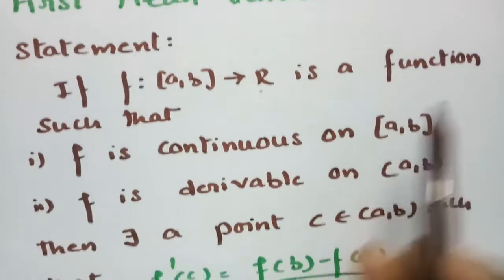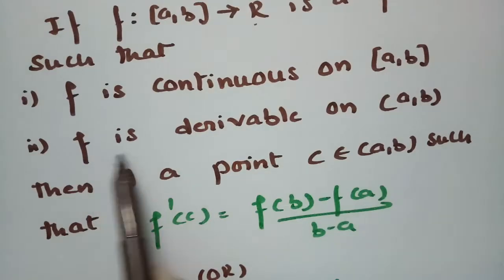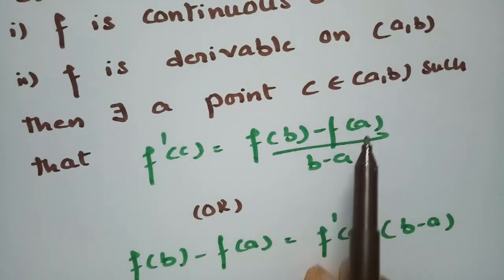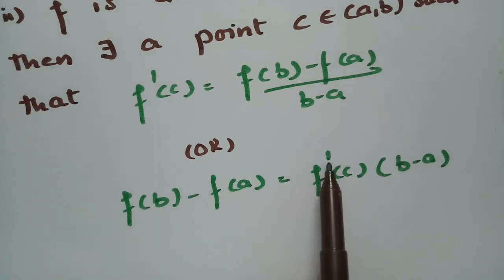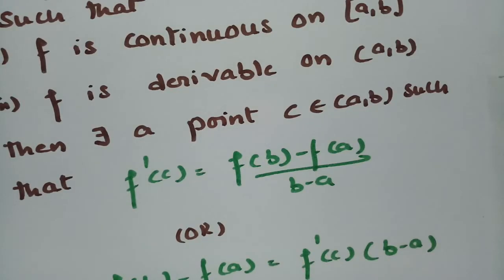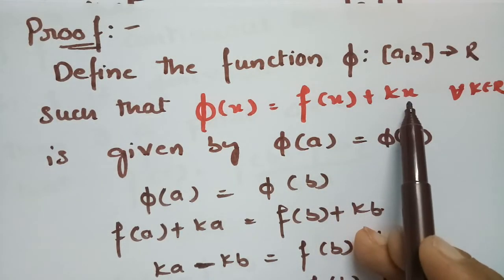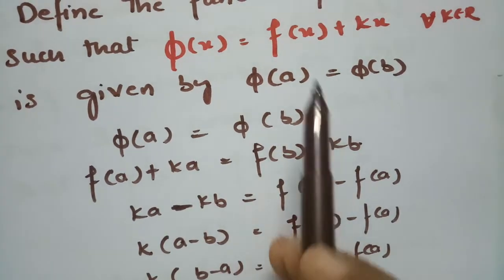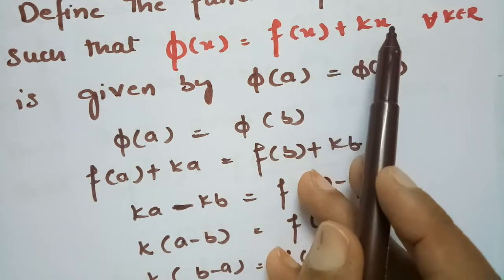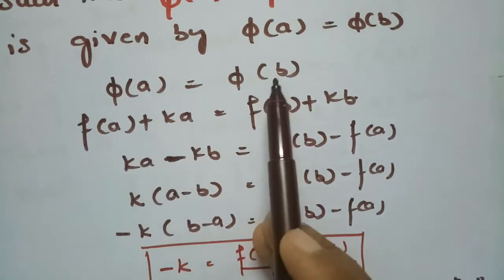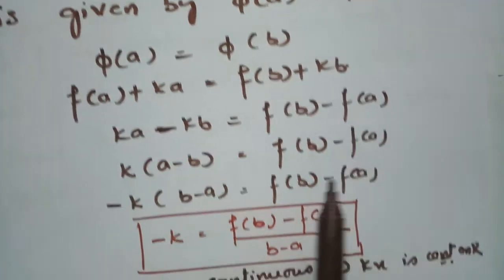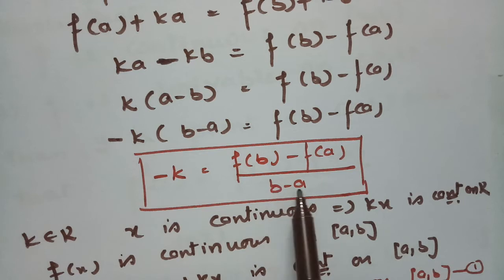Let me explain once again. The theorem statement says: f maps from closed [a, b] to ℝ, f is continuous on closed [a, b], f is derivable on open (a, b). Then there exists a point c in open (a, b) such that f'(c) = [f(b) − f(a)] / (b − a). First, I defined φ(x) = f(x) + kx and set φ(a) = φ(b). Substituting: f(a) + ka = f(b) + kb, so ka − kb = f(b) − f(a), giving −k = [f(b) − f(a)] / (b − a).